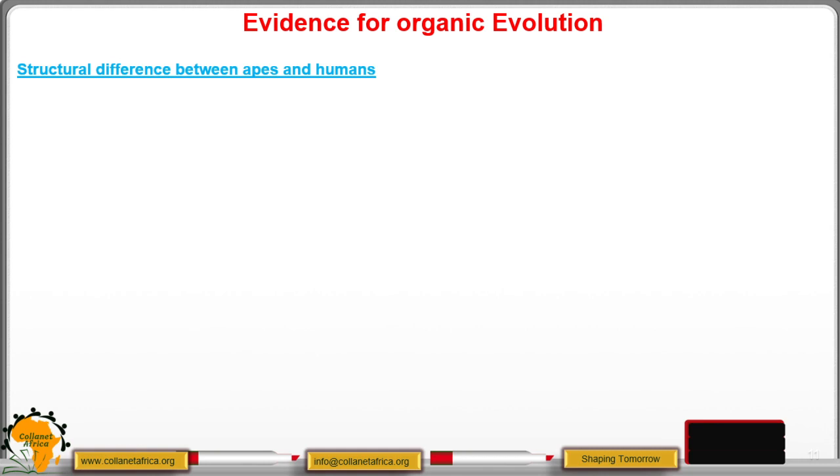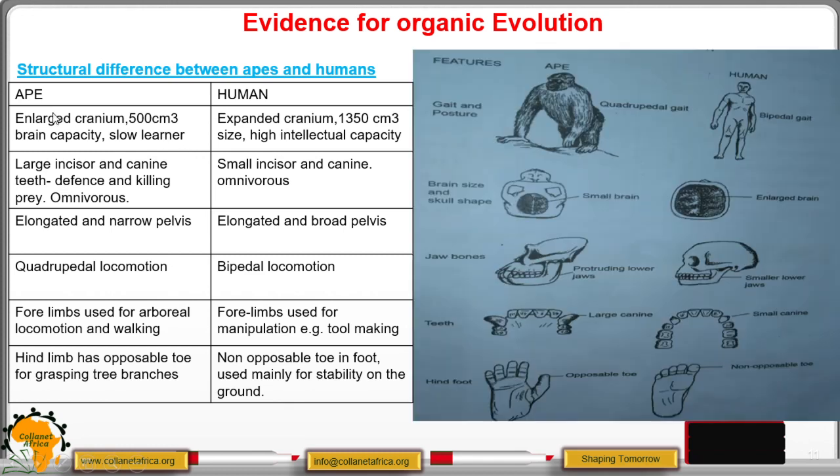Let us look at the differences between apes and humans. The ape has a brain capacity of 500 cubic centimeters therefore he was a slow learner, but the current human being is having a large brain capacity of 1350 cubic centimeters. That means it has a high intellectual capacity. You can see here the brain size is very small and this is a skull but here the brain is enlarged. And then the ape had large incisors and canines for defense and killing the prey. Here you can see the canines are big but for the modern man the canines are small.